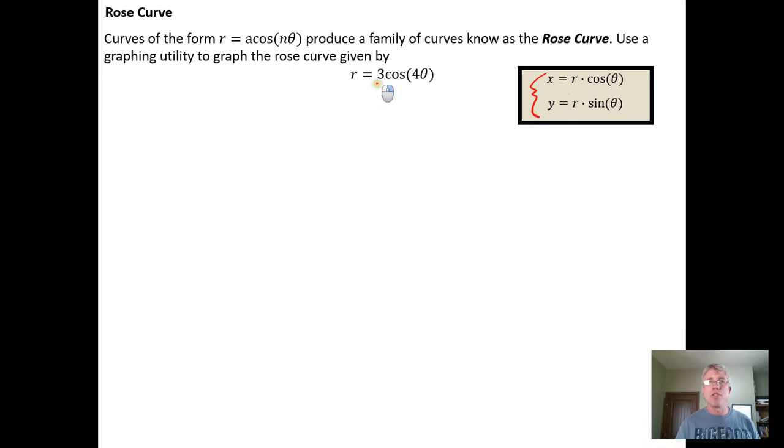Here I have a function that describes r. So I can write, if I know that x equals r times the cosine of theta, and here I know what r is as a function of theta, I can substitute for r 3 cosine of 4 theta. So this is 3 times the cosine of 4 theta times the cosine of theta.